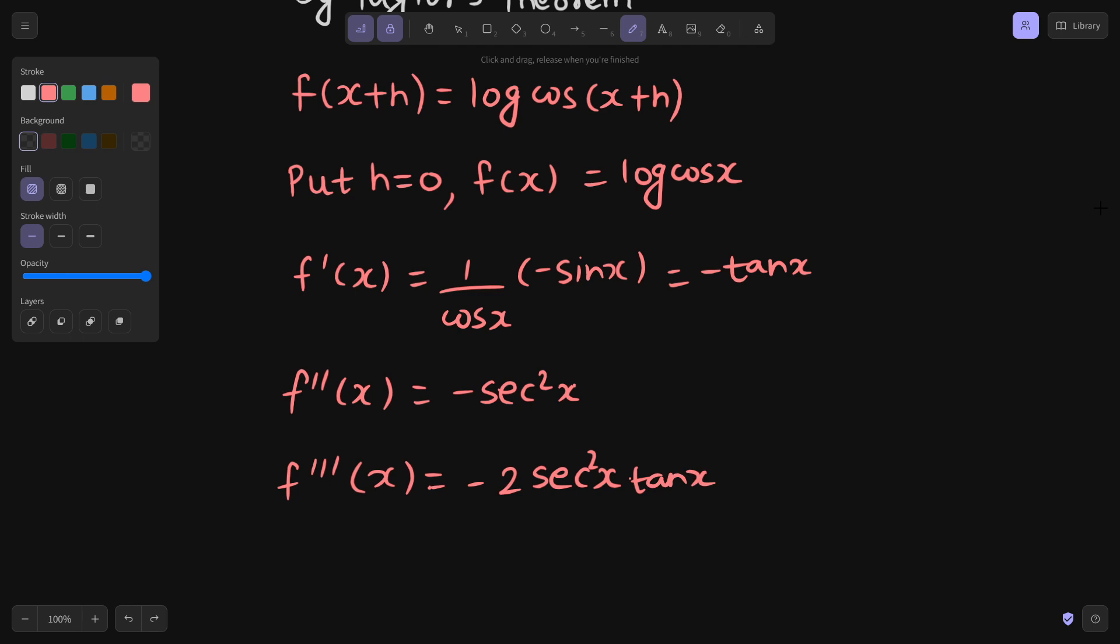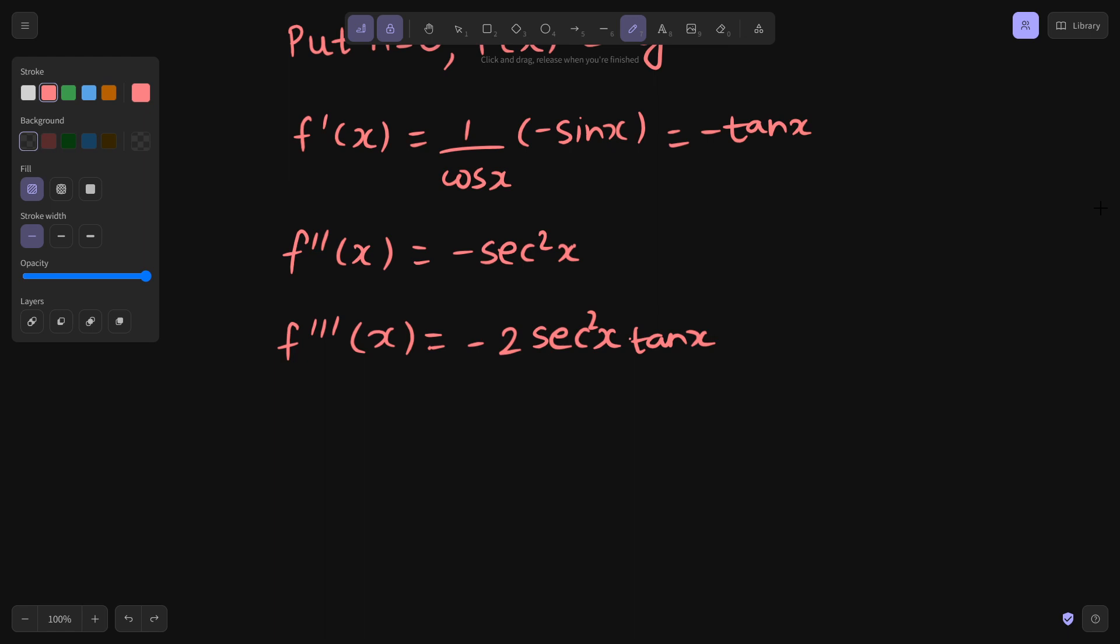Now we will have to substitute these values in that expression of Taylor's theorem which is f(x+h) = f(x) + h times first derivative + h^2 by 2 factorial times the second derivative + h^3 by 3 factorial times the third derivative, and so on.